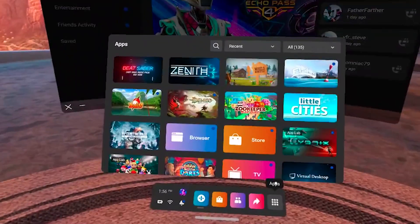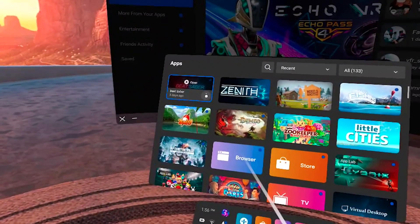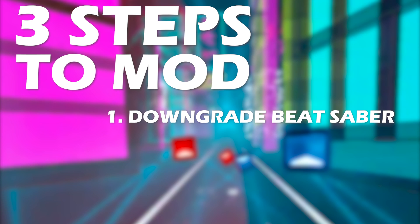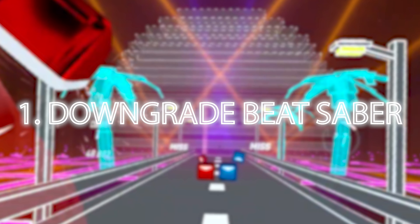To get started, you will need to have purchased your Beat Saber. Modding your Beat Saber will take three simple steps: downgrading your Beat Saber to an earlier version, patching your Beat Saber with BMBF which will make it ready for mods, and finally installing your mods. We will start with downgrading your Beat Saber.